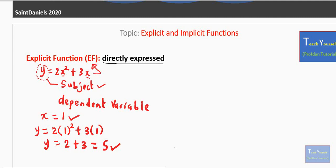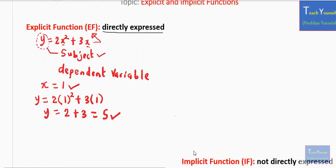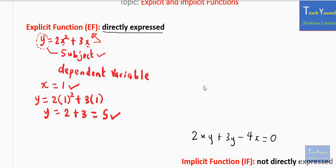What then is an implicit function? It is directly opposite to an explicit function. In this case, there is no one variable or quantity directly expressed as the other one. So we can have something like 2xy plus 3y minus 4x equals 0. In this equation, there is no one variable — x or y — that is directly expressed as a subject. So this is an implicit function.